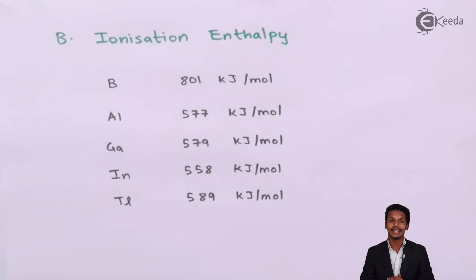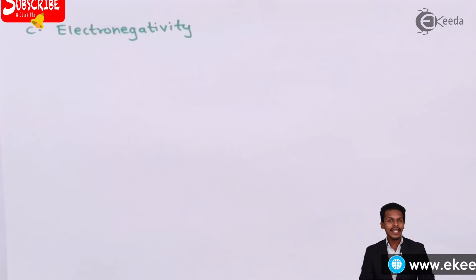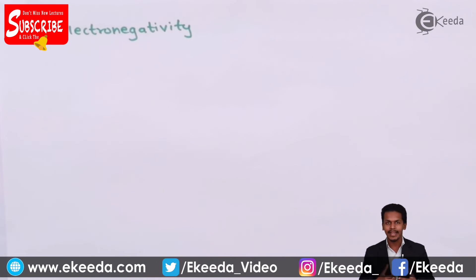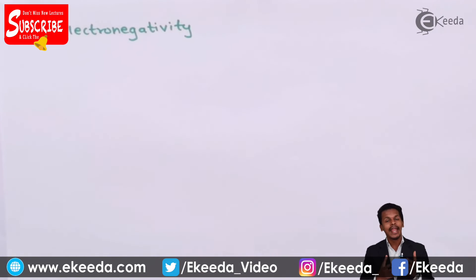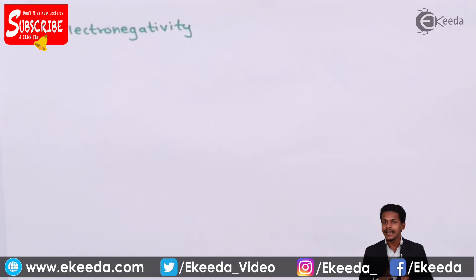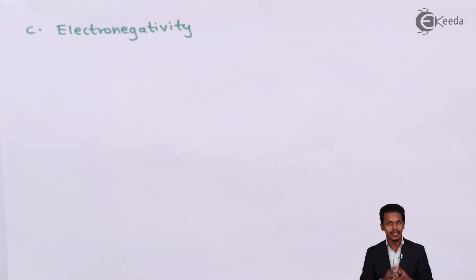Now let us move on to the next property — electronegativity. Electronegativity is the tendency of an atom or element to attract the electrons of another element towards itself, or to attract the shared pair of electrons towards itself. Let us discuss the values calculated for group 13 elements.